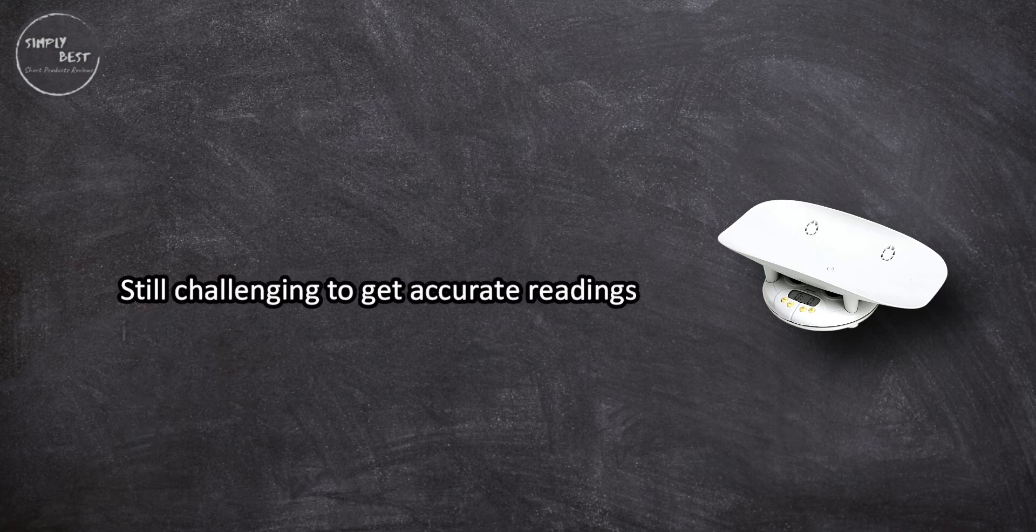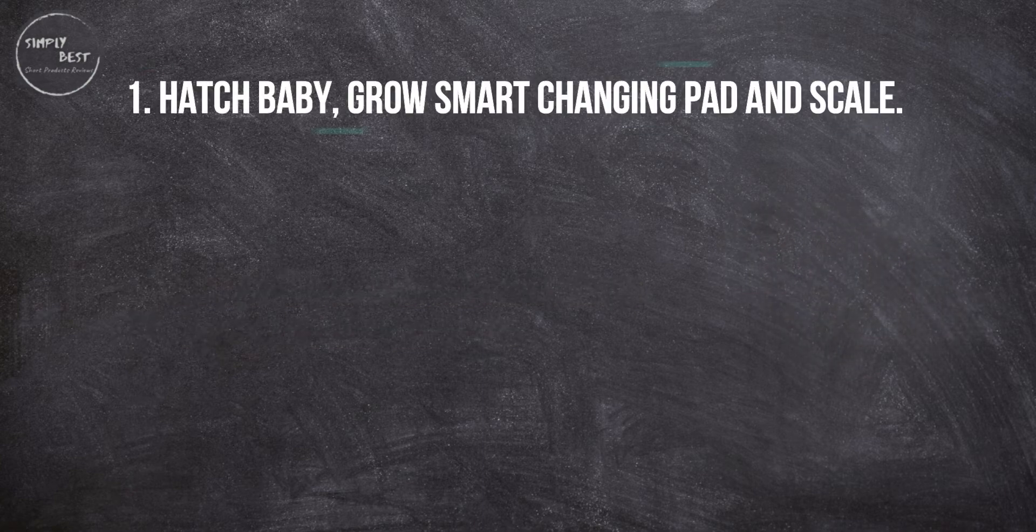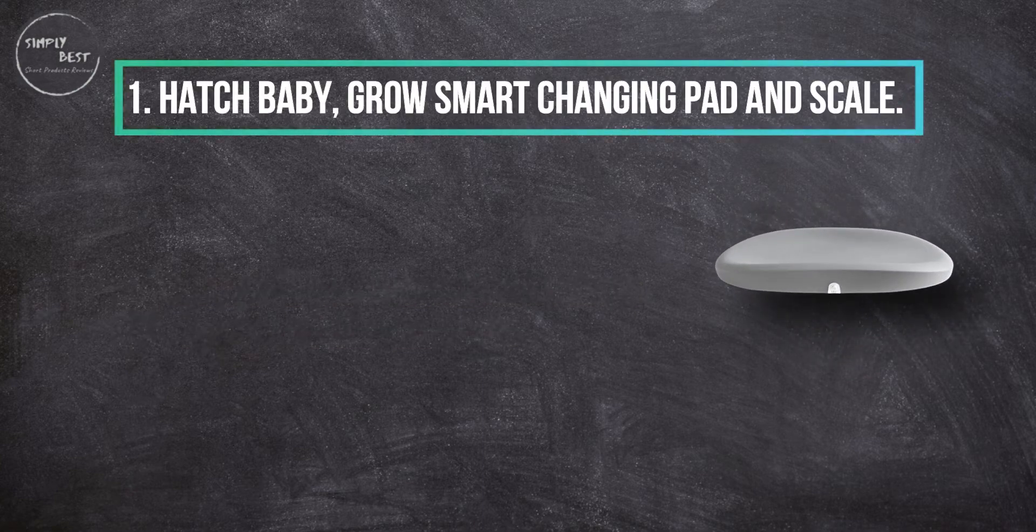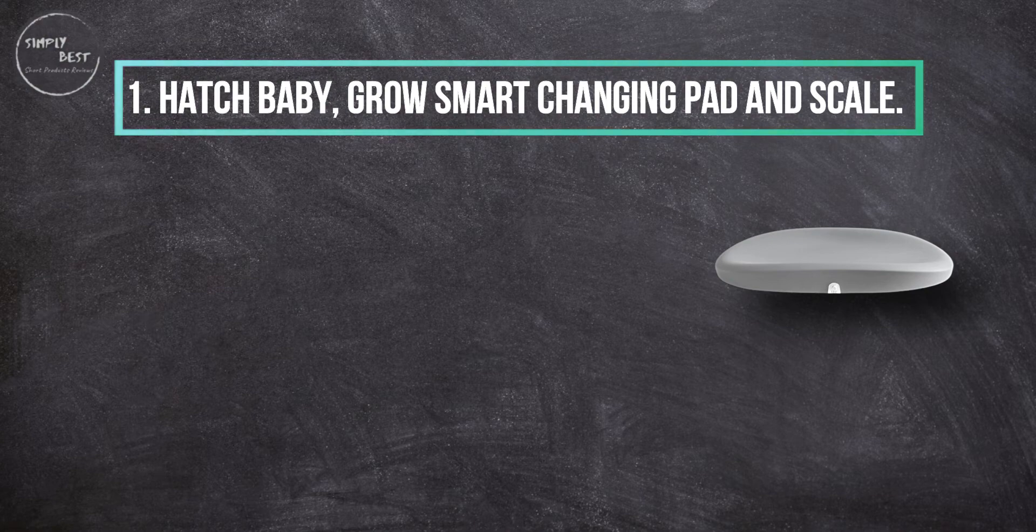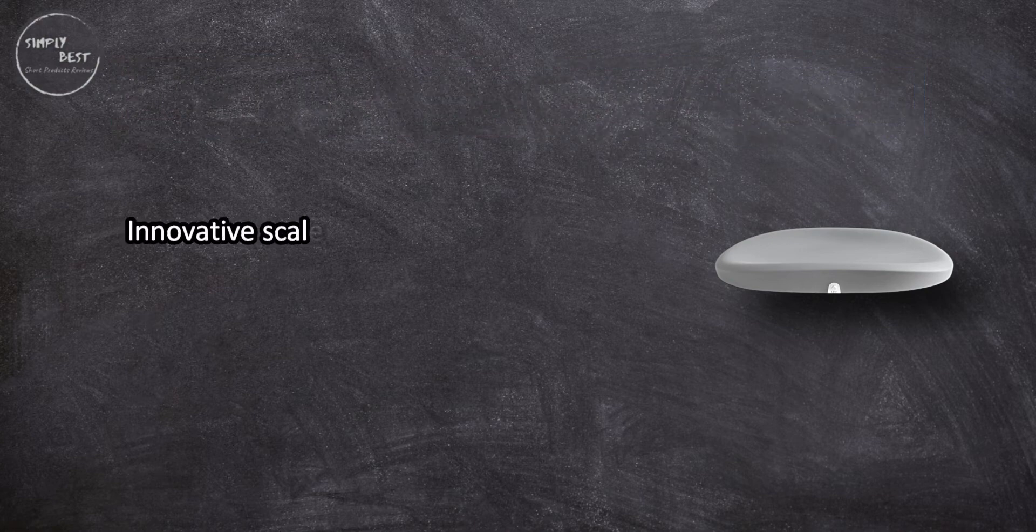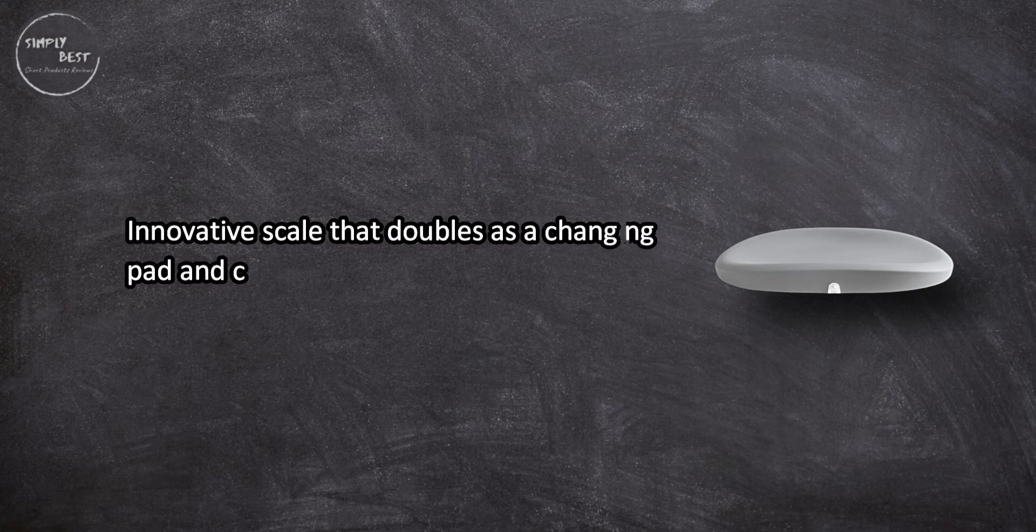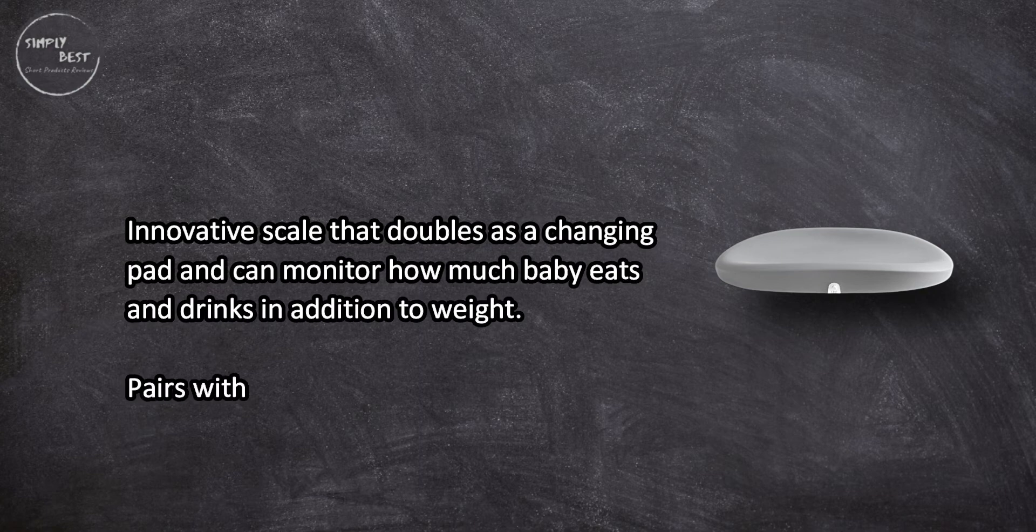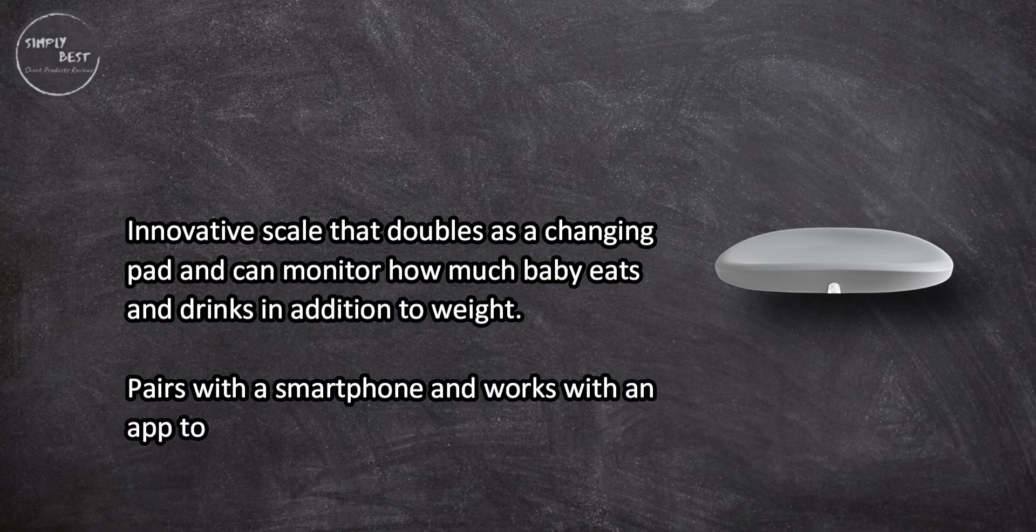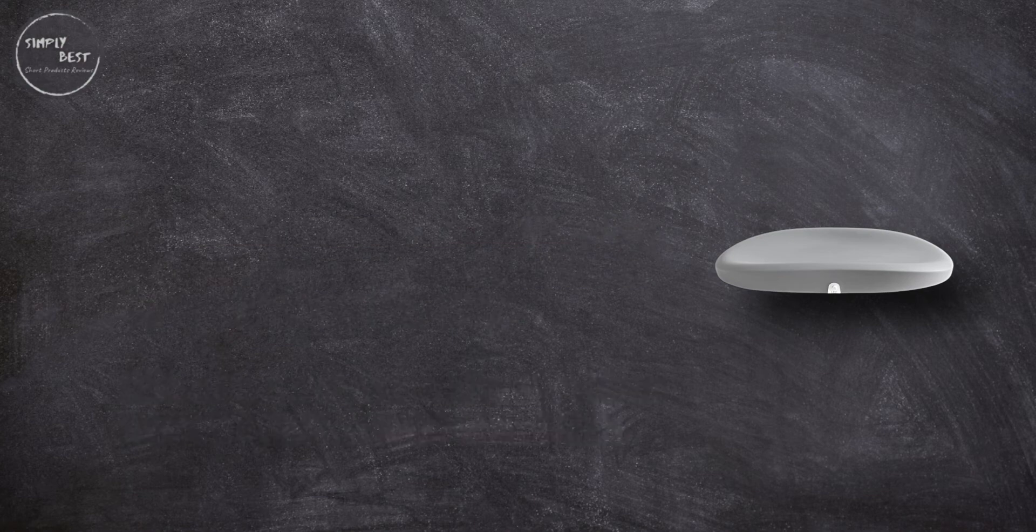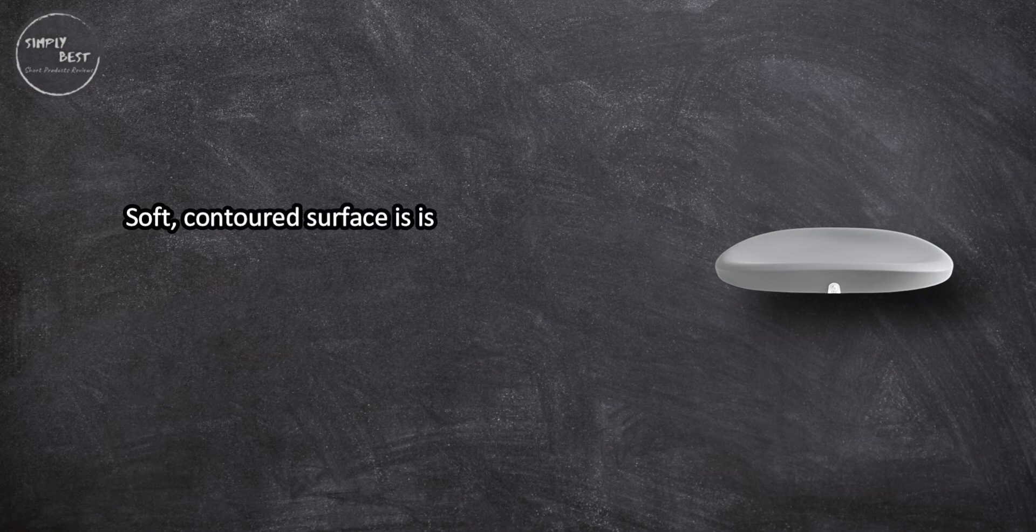At number one, Hatch Baby Grow Smart Changing Pad and Scale. Innovative scale that doubles as a changing pad and can monitor how much baby eats and drinks in addition to weight. Pairs with a smartphone and works with an app to measure weight and diet metrics. Soft contoured surfaces, easy to wipe clean, one-year warranty.